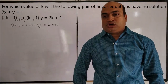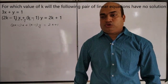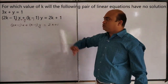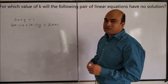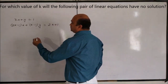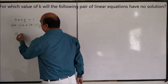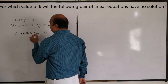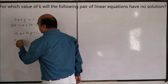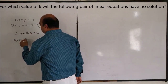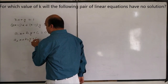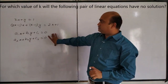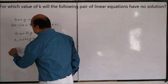The question is: for which value of k will the following pair of equations have no solution? We compare these equations with the standard equations a1x plus b1y plus c1 equal to 0 and a2x plus b2y plus c2 equal to 0.